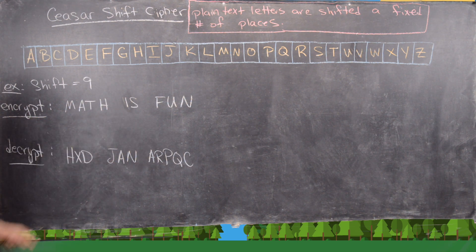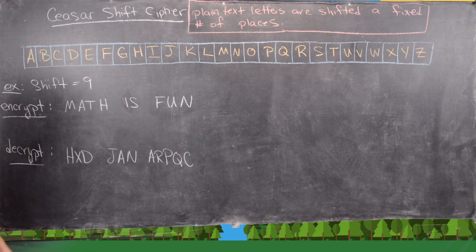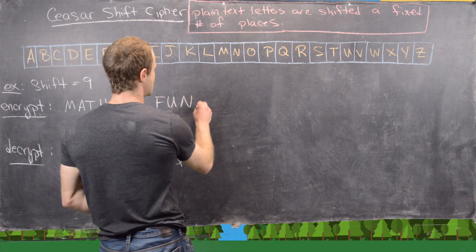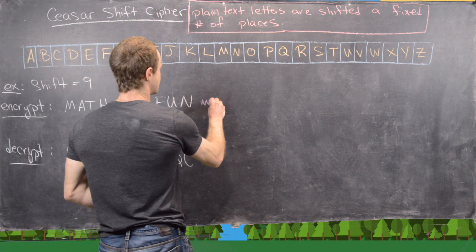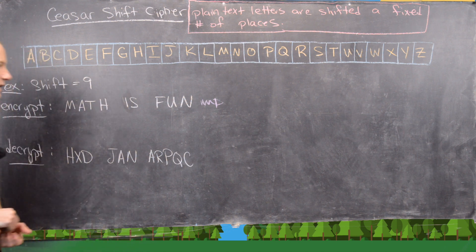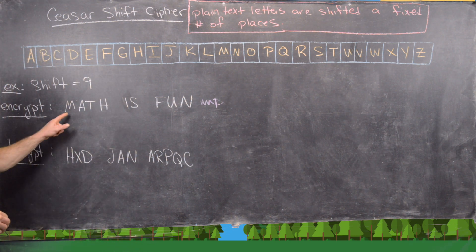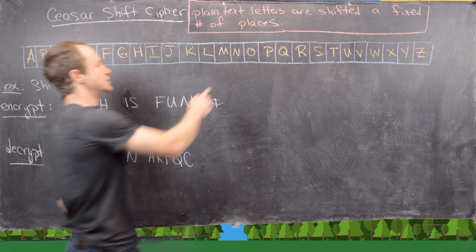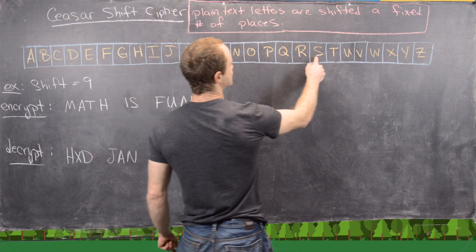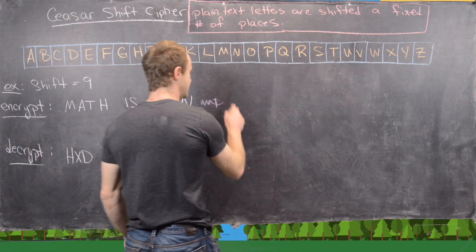So let's encrypt this message: 'math is fun'. That means we need to shift M 9 units to the right, A 9 units, and so on. So M goes 9 places to V.